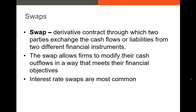The final instrument we have are swaps. Swaps are derivatives that allow two parties to exchange cash flows or liabilities from two different financial instruments. There are a lot of reasons to use swaps, but the most common reason for firms is to alter the cash flows they have to pay to creditors. There are all kinds of swaps, including interest rate swaps, commodity swaps, currency swaps, and credit default swaps. However, interest rate swaps are the most common, so let's have a look at that.